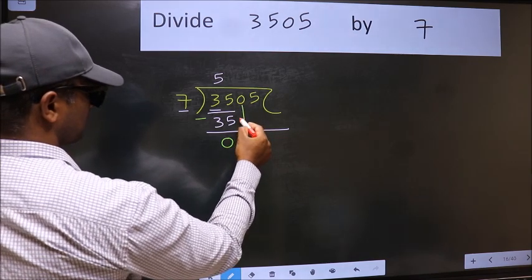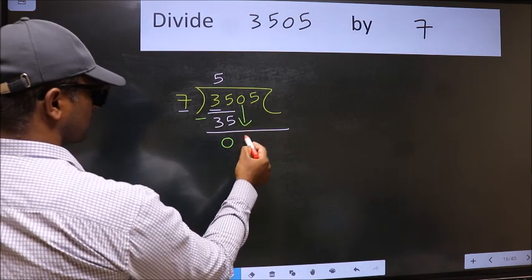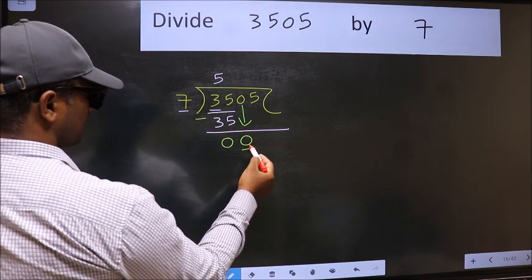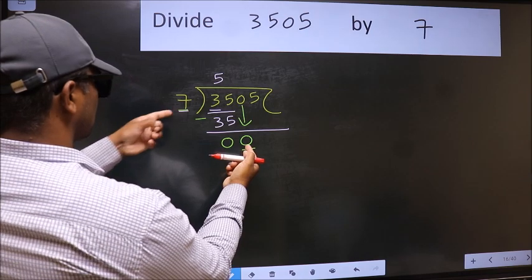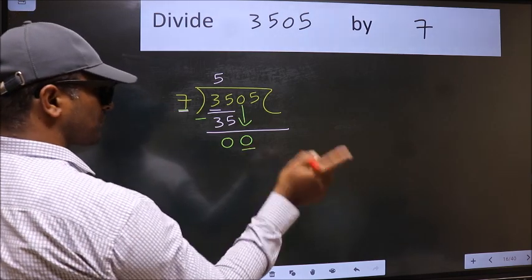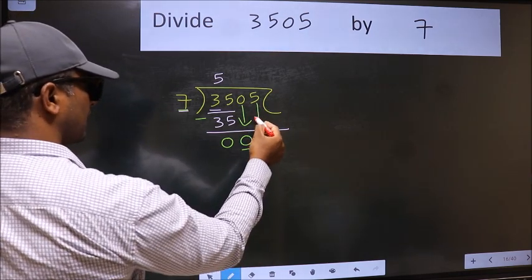After this, bring down the beside number. So 0 down. Now here we have 0 and here 7. 0 is smaller than 7.